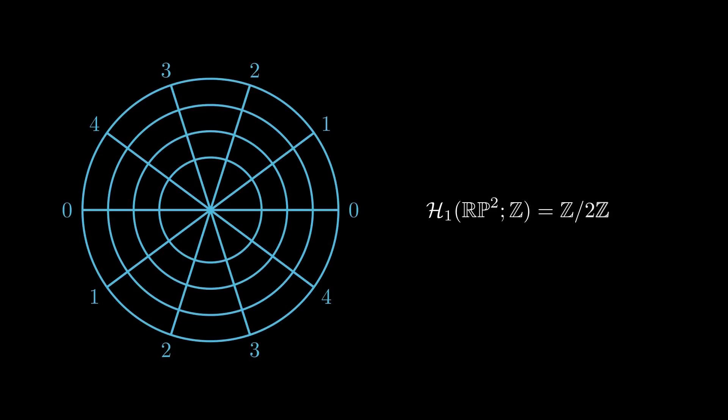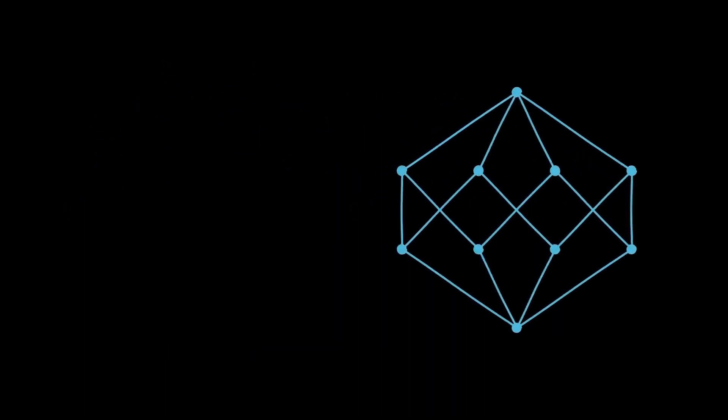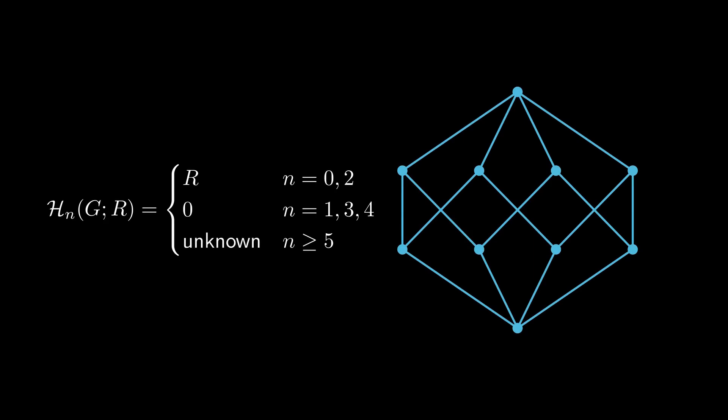We also have a tentative model for the 2-sphere, which is this graph here, which is called the green sphere, named after Curtis Green. And in dimensions 0 and 2, the homology group is the ring itself. And in dimensions 1, 3, and 4, the homology group is trivial. It's actually unknown as well what the homology groups are for n greater than or equal to 5.